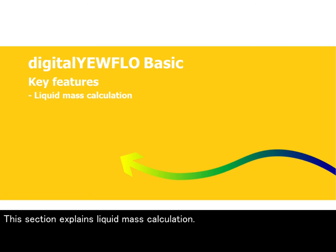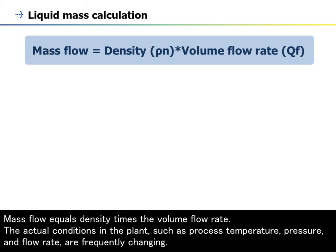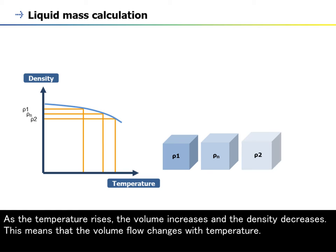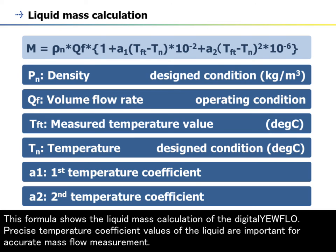This section explains liquid mass calculation. Mass flow equals density times the volume flow rate. The actual conditions in the plant, such as process temperature, pressure, and flow rate, are frequently changing. This graph shows the density versus temperature of a liquid. As the temperature rises, the volume increases and the density decreases. This means that the volume flow changes with temperature. If we measure liquid mass flow, we can compensate the volume flow. The density of the liquid is compensated per the measured temperature value. This formula shows the liquid mass calculation of the Digital EarFlow. Precise temperature coefficient values of the liquid are important for accurate mass flow measurement.